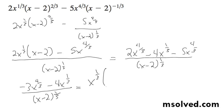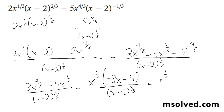I'll just factor out x to the 1/3rd. And I get negative 3x minus 4 over x minus 2 raised to the 1/3rd. And I can rewrite it as x to the 1/3rd times quantity negative 3x minus 4 times x minus 2 raised to the negative 1/3rd. And that's it.